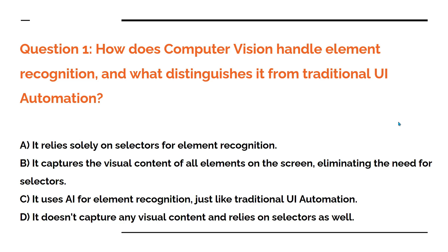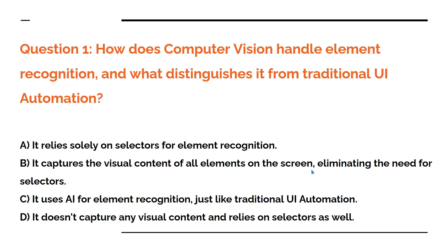The very first question on your screen: how does computer vision handle element recognition and what distinguishes it from traditional UI automation? Option A: it relies solely on selectors for element recognition. Option B: it captures the visual content of all elements on the screen, eliminating the need for selectors.